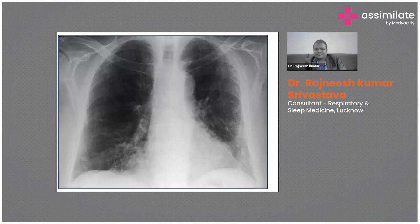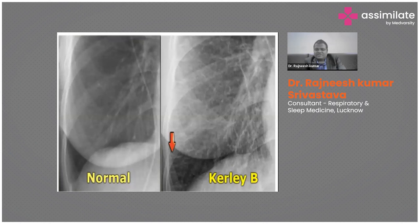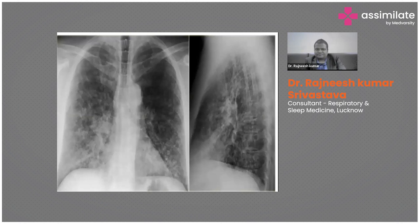This X-ray again shows interstitial abnormalities with reticular patterns. However, it is important to note that not all reticular opacities indicate ILD. In this example, an older film showed a reticular pattern due to pulmonary edema. Pulmonary edema causes fluid overload, making the interstitium prominent since veins run through it. A key distinguishing feature of pulmonary edema is Kerley B lines — subpleural horizontal lines two to three centimeters long at the lung periphery. Kerley B lines with reticular pattern suggest pulmonary edema, not ILD.